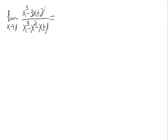Let's calculate the limit we see on the screen. We can see that we have a limit when x approaches a number of a quotient of polynomials. So, for calculating this limit, first of all we have to try substituting the number — the one — to see if it gives us a number.